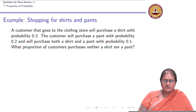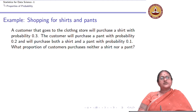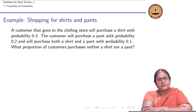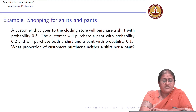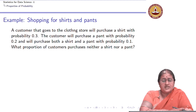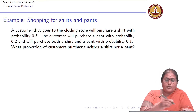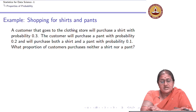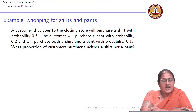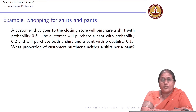Let us look at a few applications of the addition rule. Suppose we have a customer who goes to a clothing store and we know the following information: the person can purchase a shirt with a probability of 0.3. The customer will purchase a pant with a probability of 0.2 and will purchase both a shirt and a pant with probability 0.1.